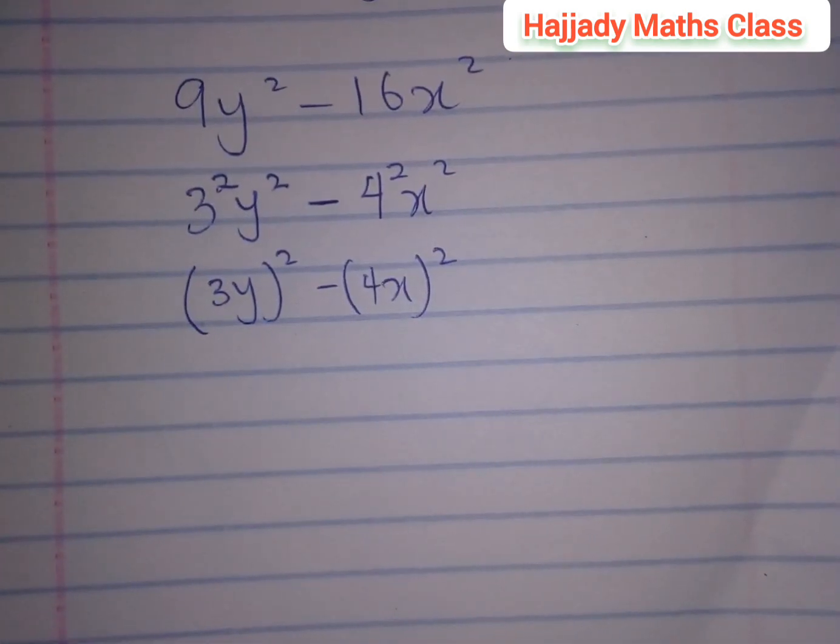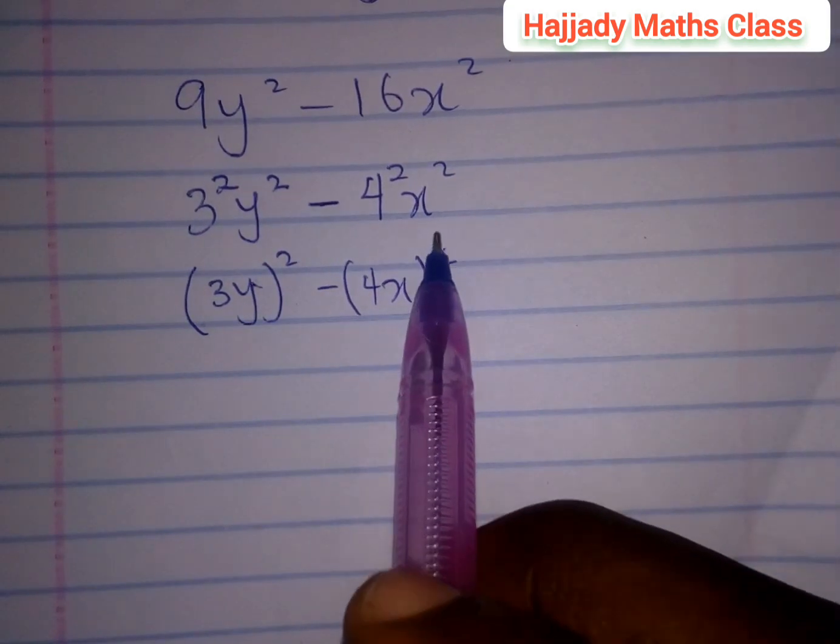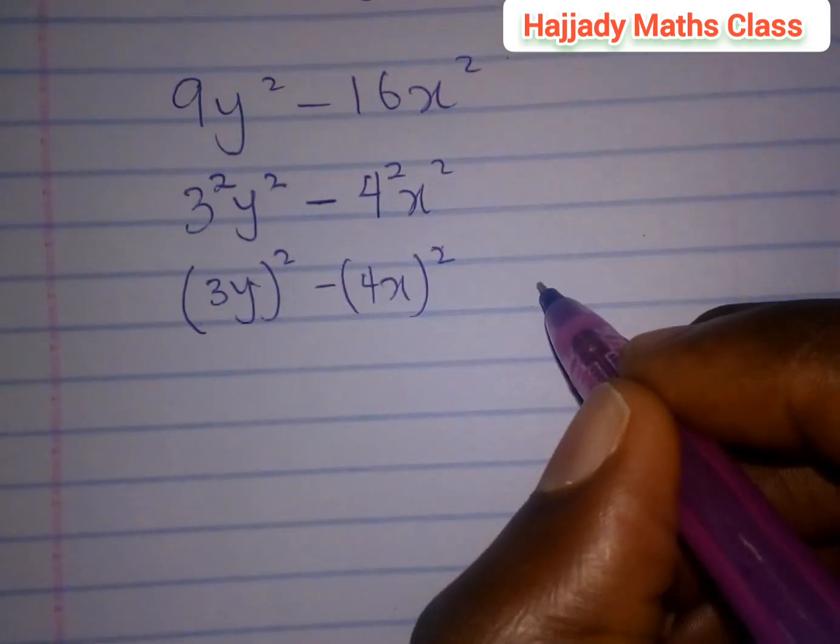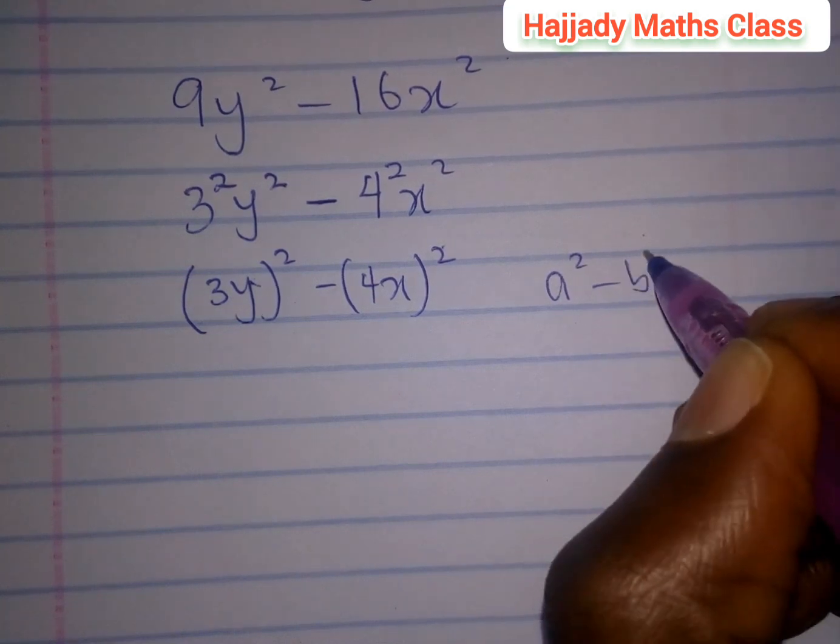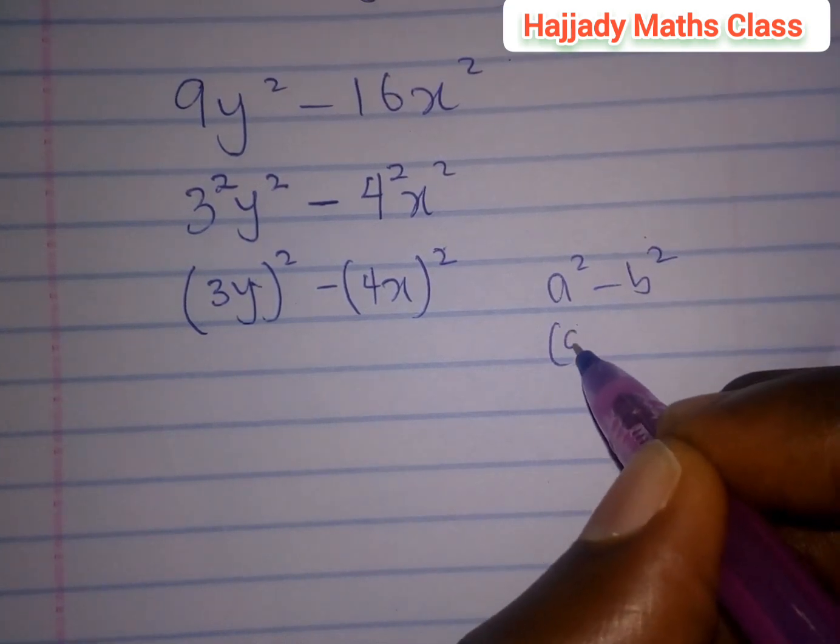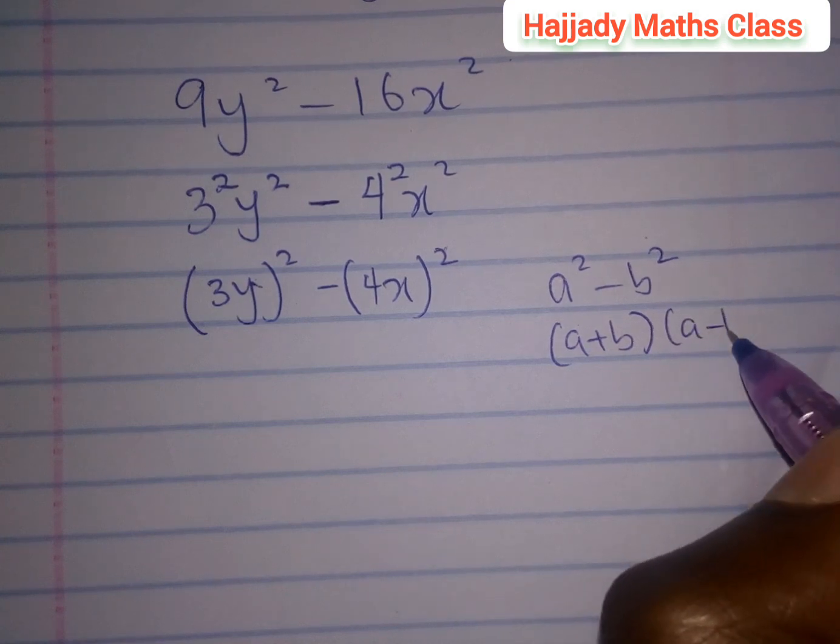And writing this further, this is a square, this is a square. And there is a rule that says when you have a² - b², it can be expressed as (a + b)(a - b).